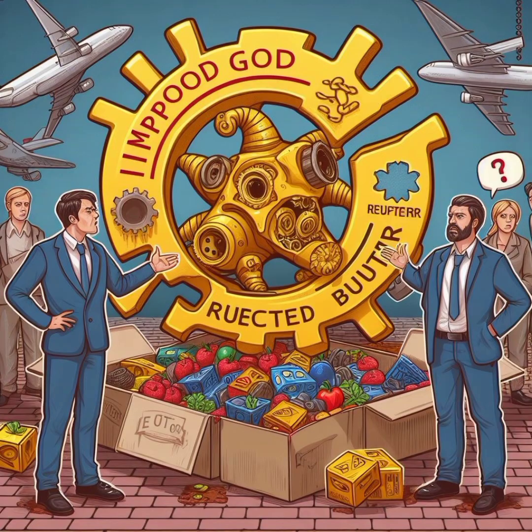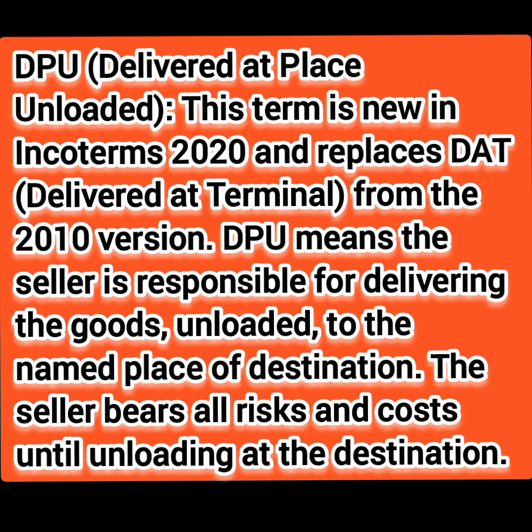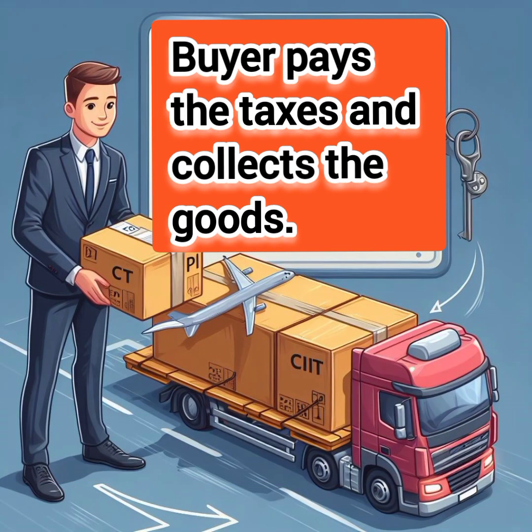If the buyer says that's still too much, you may offer DPU — Delivered at Place Unloaded. This term is new in Incoterms 2020, replacing DAT (Delivered at Terminal) from the 2010 version. DPU means the seller is responsible for delivering the goods unloaded to the named place of destination, bearing all risks and costs until unloading at the destination. The only thing the buyer has to do is pay any applicable taxes and take the goods to his place.